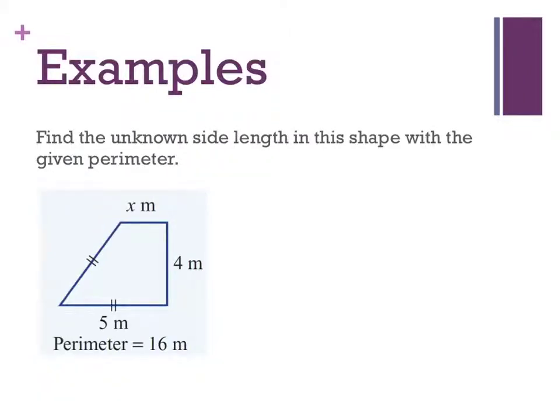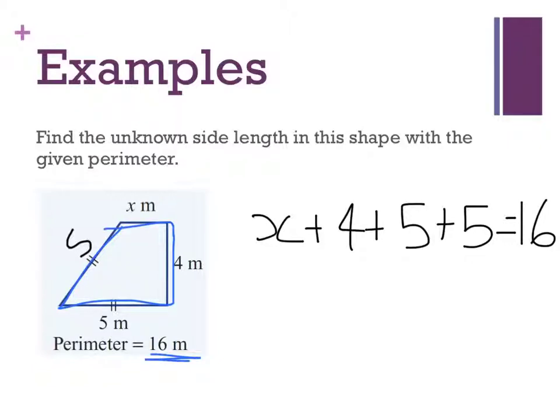Let's look at this example here. This example is given as find the unknown side lengths in this shape with the given perimeter. So I've been given a perimeter of 16. And I'm missing some sides. So I know this one here is five. So if the whole thing's 16, all I have to do is say x plus four plus five plus five equals 16. So there's something I don't know and whole lots of things that I do know and I know that all together they equal 16.